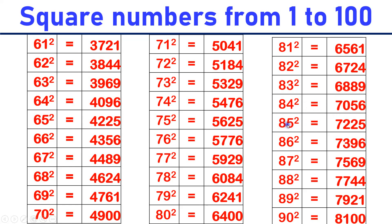85 square is equal to 7225. 86 square is equal to 7396. 87 square is equal to 7569. 88 square is equal to 7744. 89 square is equal to 7921.